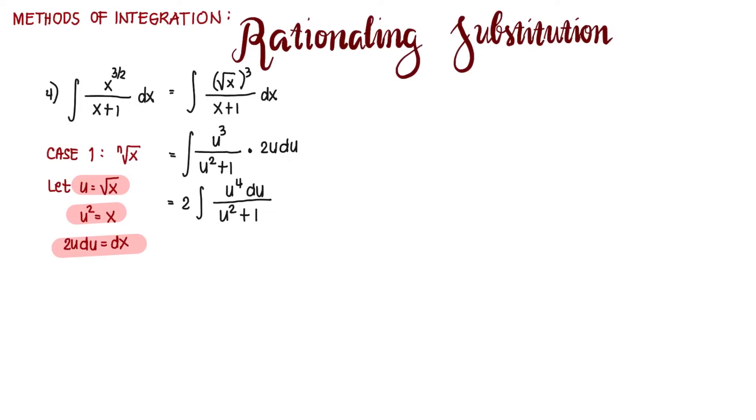We have an improper fraction, so we perform long division. That's u to the power of 4 divided by u squared plus 1. u to the power of 4 divided by u squared is u squared. Multiply, that's u to the power of 4 plus u squared. We subtract, so this is cancelled.